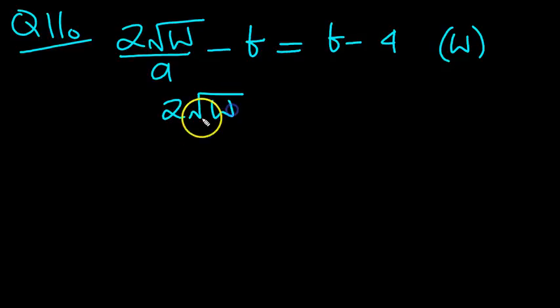So leave the 2 root w over a where it is, and then move this minus b to become plus b. Add it to the other b, you get 2b. And the minus 4 can stay where it is.